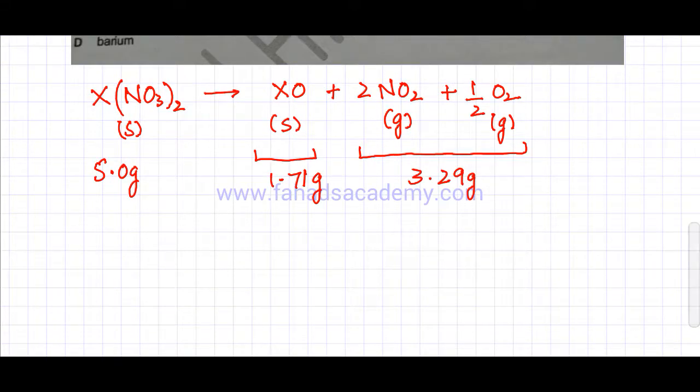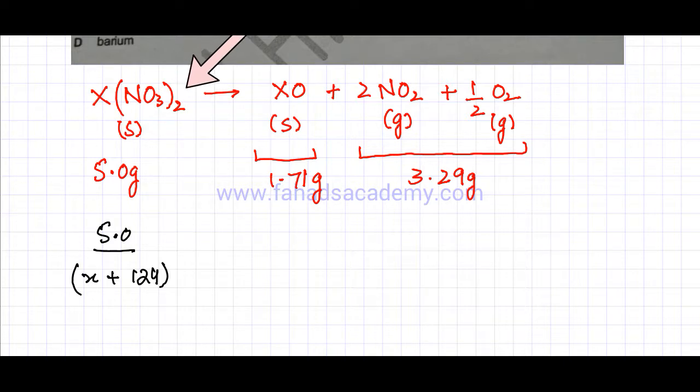So what I'm going to do is find the moles of both, but I don't know what X is. Moles is mass over MR. The mass is given, it's 5 grams, so mass divided by the MR. I don't know what the AR of X is, so that's an unknown. For nitrate it's 14 plus 16 times 3, and that would be multiplied by 2, which gives me 124. So the MR in terms of X is X plus 124.